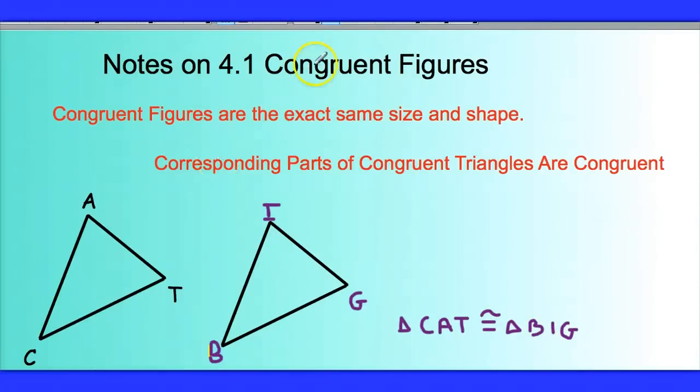So one of the things that I'm sure you're thinking is, is there a way to abbreviate corresponding parts of congruent triangles are congruent, if we were going to use this as a reason in a proof? And the answer for that is yes, there is a way to abbreviate that.